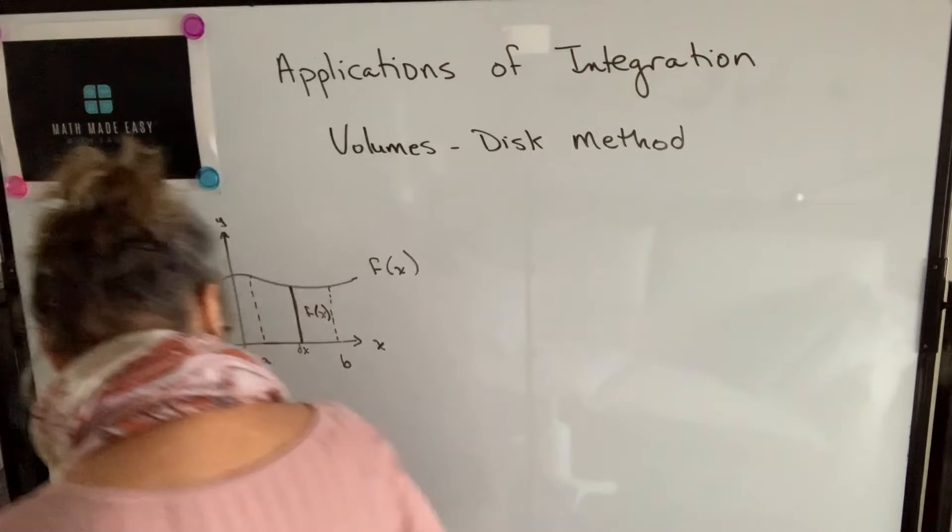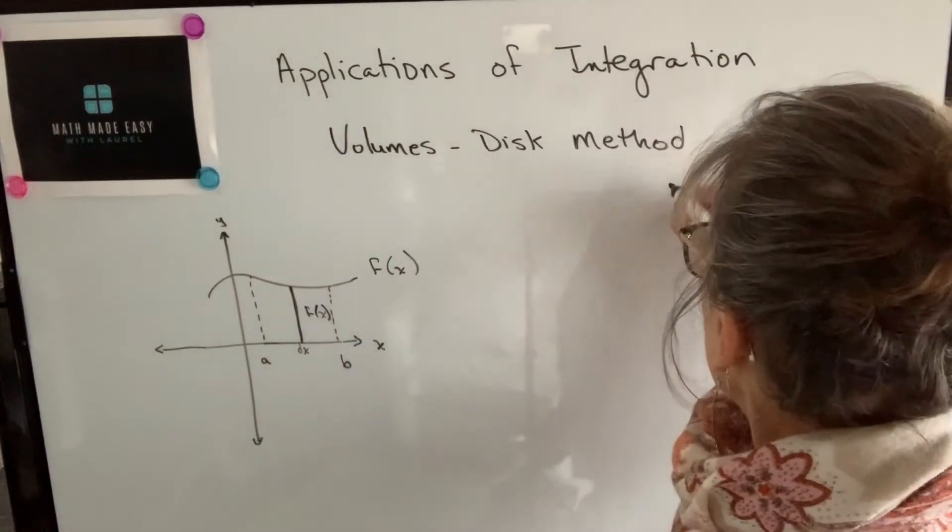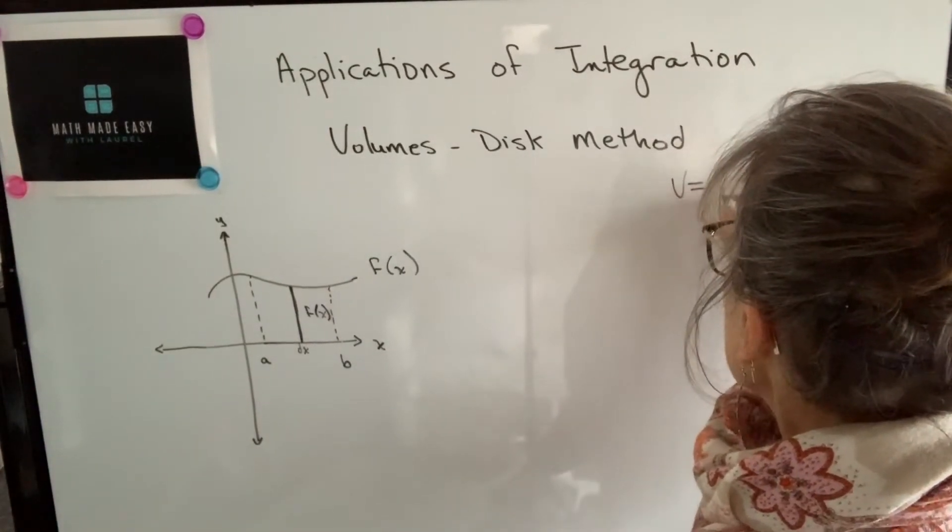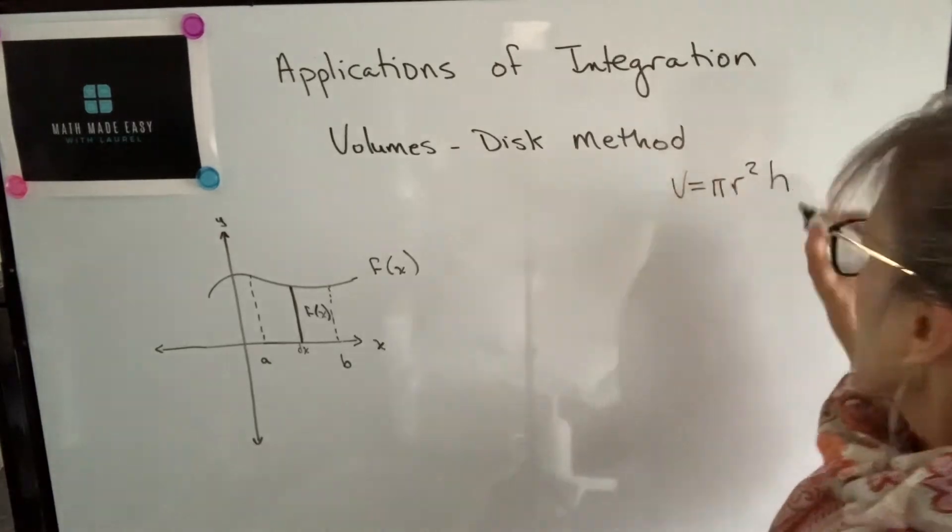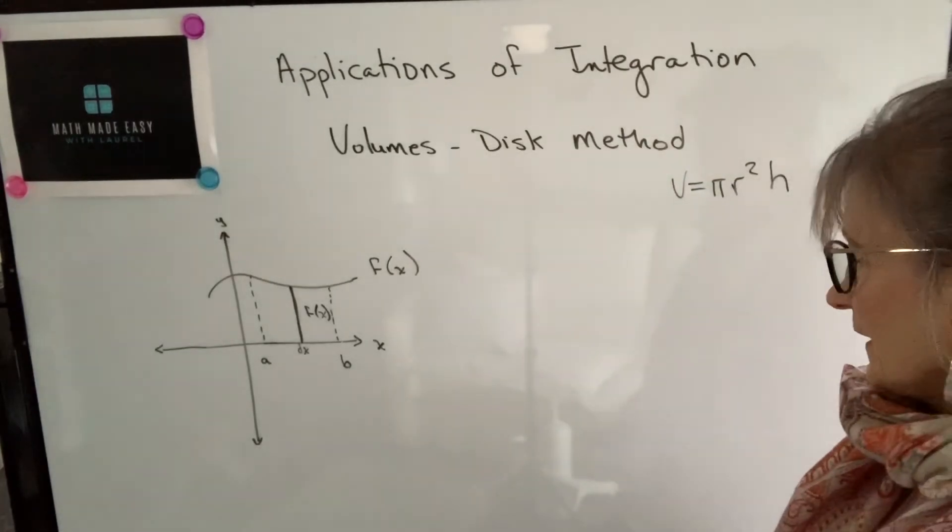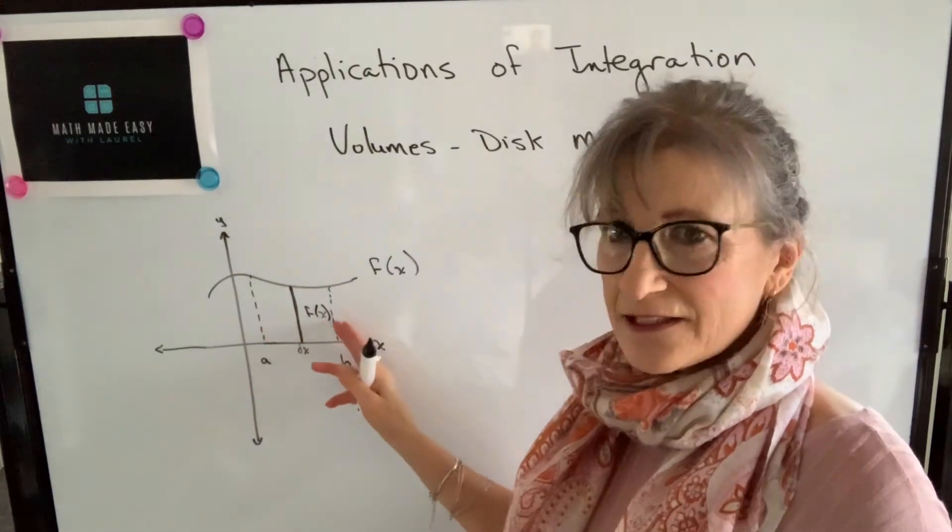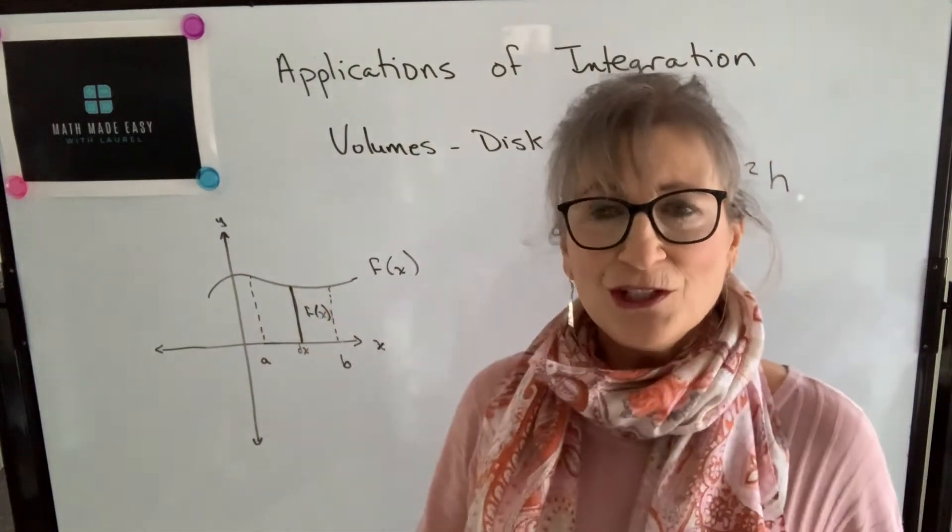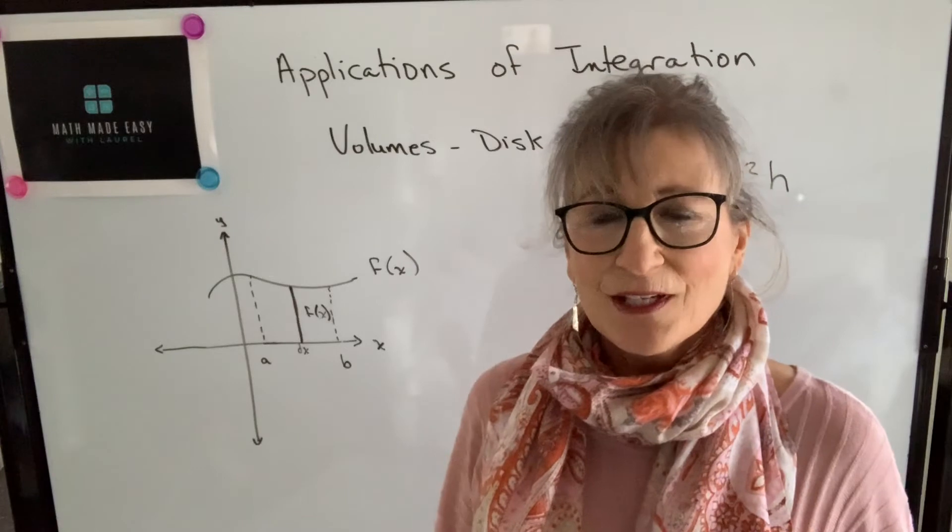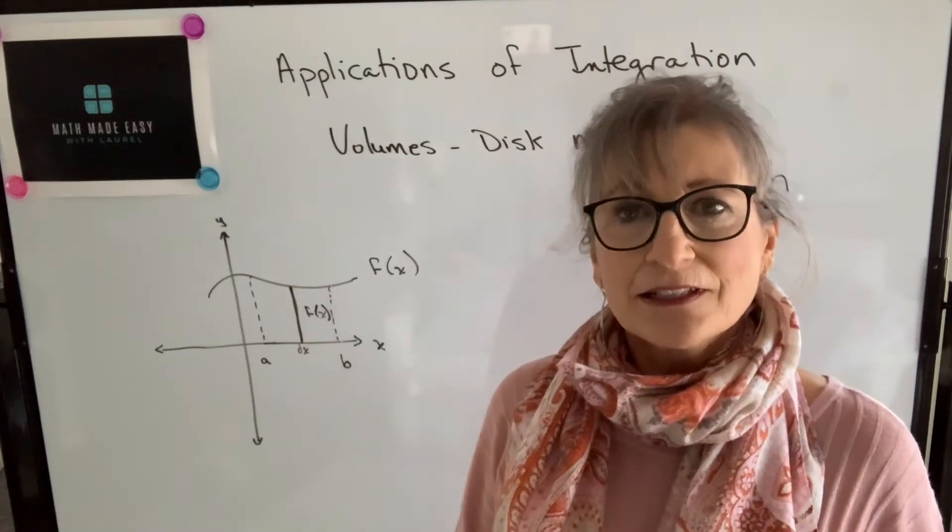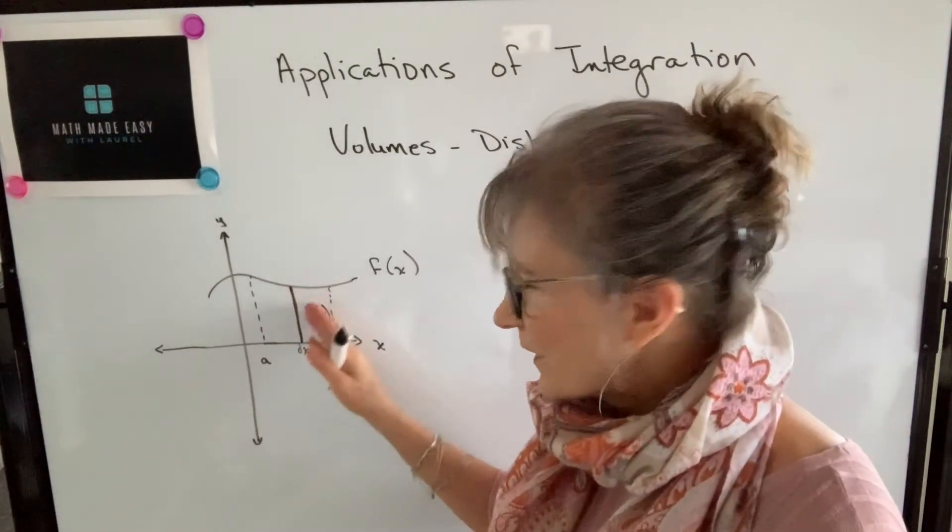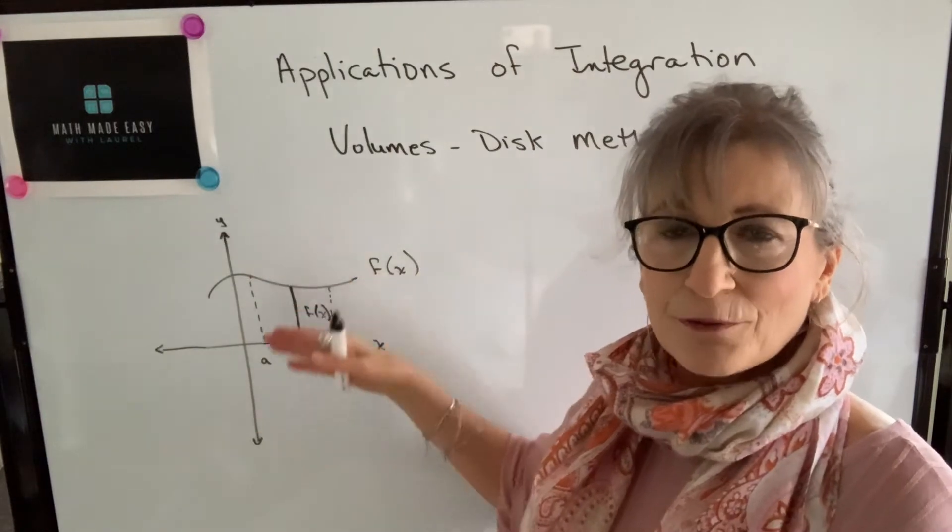and we can find the volume of that disc or that cylinder by using our volume of a cylinder formula. So as a review, the volume of a cylinder is pi times radius squared times height. And if we want to sum all of those discs together from A to B, we need to use integration. So this is what the formula is going to look like for finding the volume of this total area as it's rotated around the x-axis.